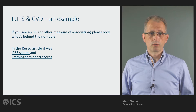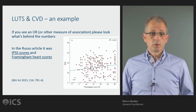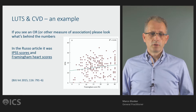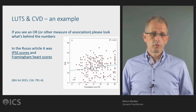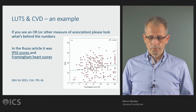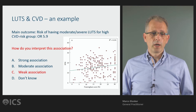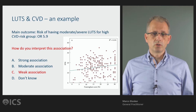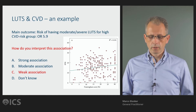In this figure you see the raw data they presented. On the y-axis it's the IPSS score, with outcomes ranging from 0 to 35, where 35 is the highest score. On the x-axis it's the Framingham score as a percentage ranging from 0 to 30%. If you look at this outcome, I think you can only conclude that the association is just a weak association.